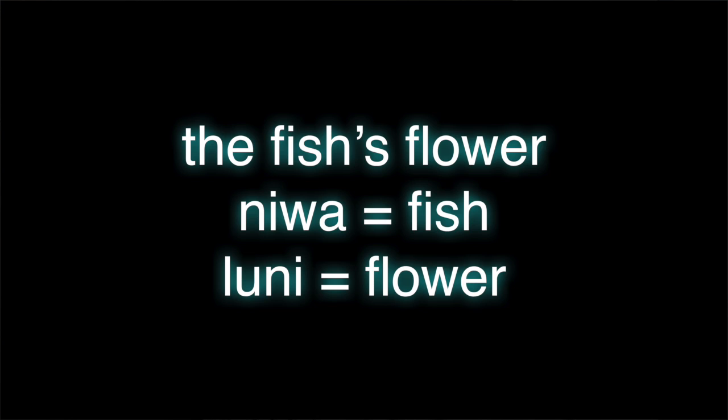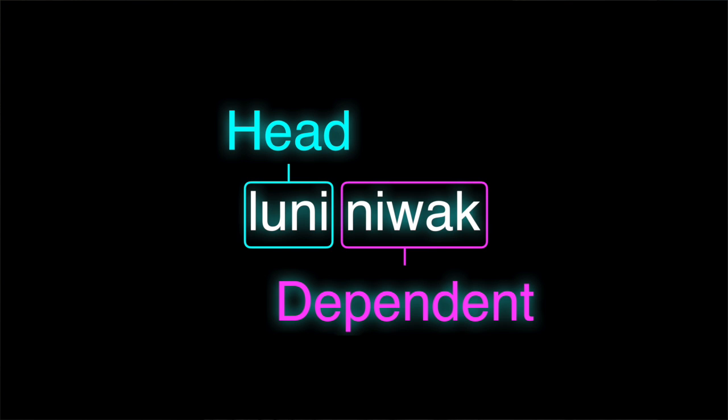Next, let's talk about possessive phrases. Let's use the example 'the fish's flower' — since fish are the masters of flowers and all fish own all flowers. A dependent marking strategy would be 'luni niwak': luni (flower) has no marking, and niwak is fish with a genitive suffix. That's dependent marking — even though the possessor is semantically dominant, grammatically it's the dependent, the thing not being directly discussed. Because it gets the marking, this is dependent marking.